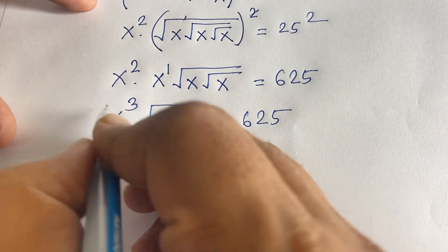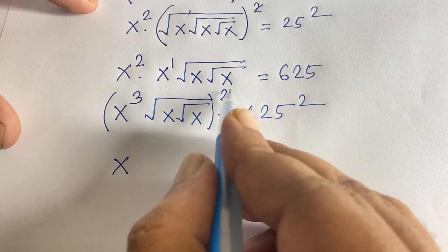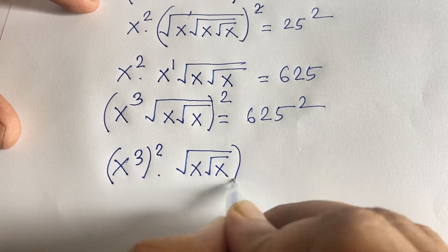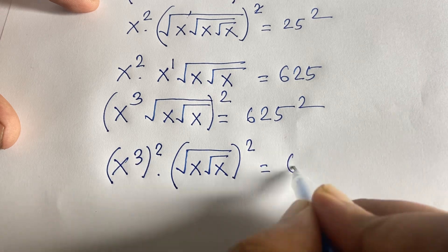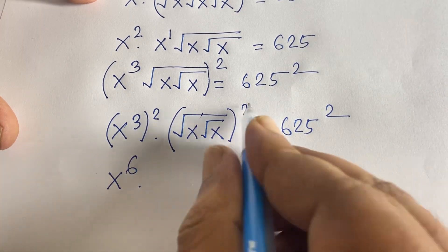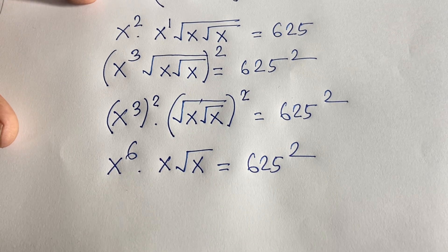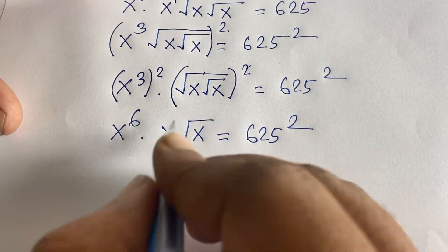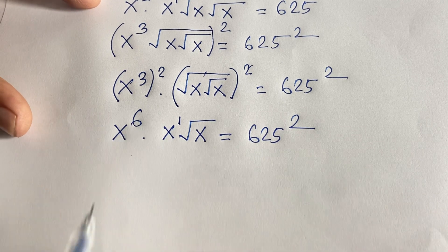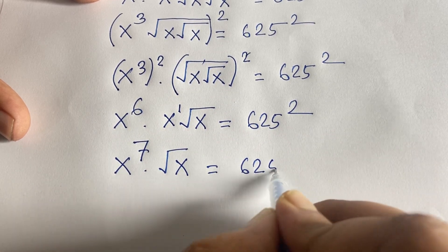I square both sides again. x to the power of 3, squared, gives x to the power of 6. Adding the remaining exponent of 1 gives x to the power of 7. So x to the power of 7 times square root of x equals 625 squared, which is 5 to the power of 4.